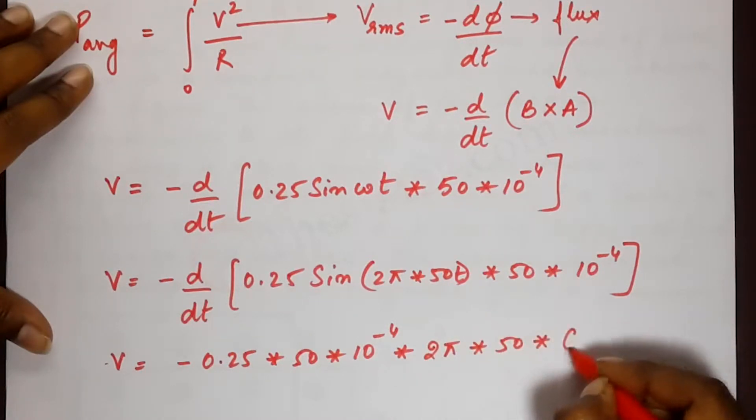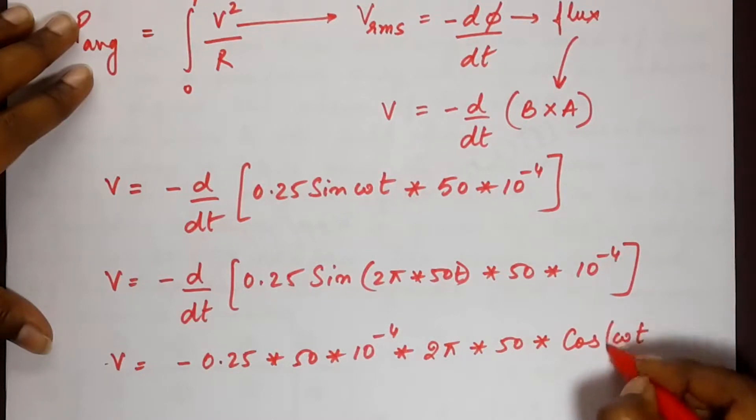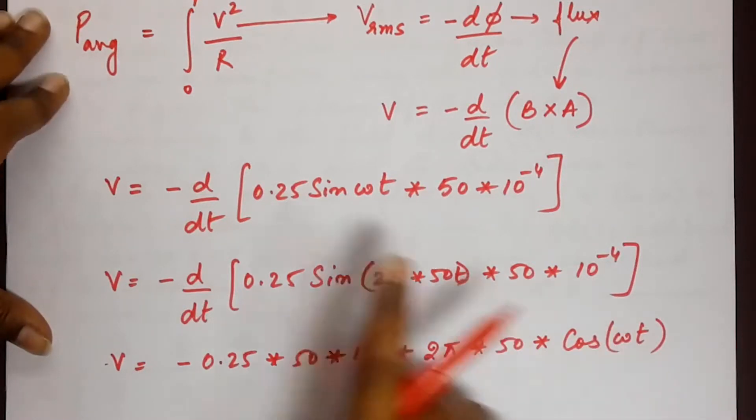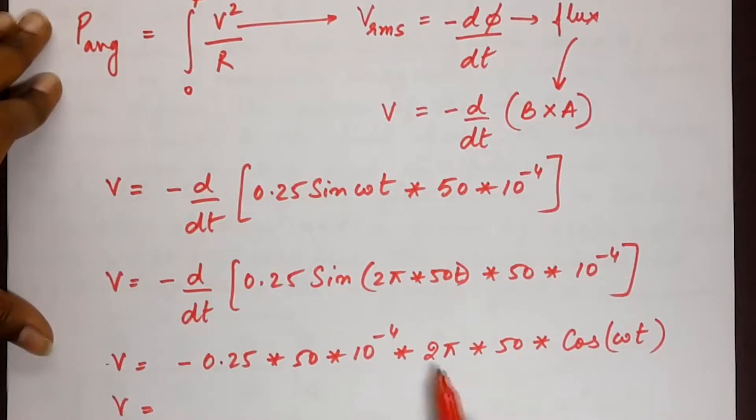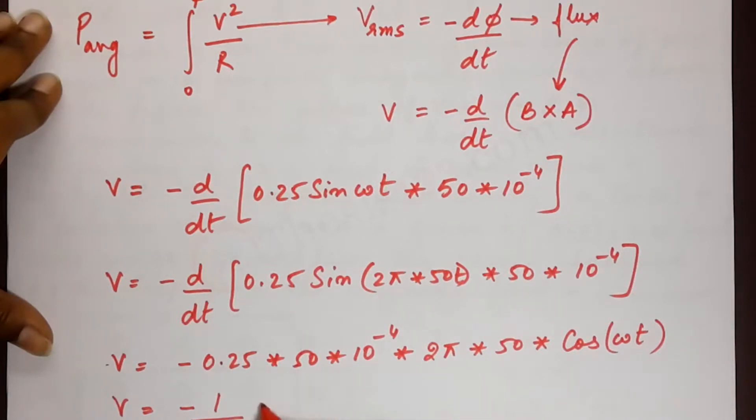I'm going to write cos of omega t into omega. I'm not going to substitute the value of omega there because we will have to find out the average power. So I'll leave that as it is. Now if we solve this further, I'm going to write the entire thing in terms of a fraction rather than a decimal point to make it a little easier. So we have 1 divided by 800 times 100 pi cos of omega t. So this is v.